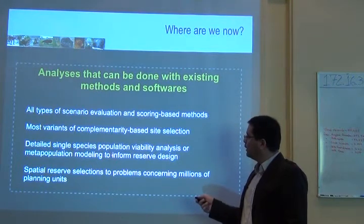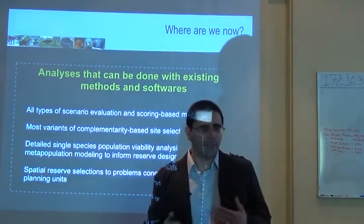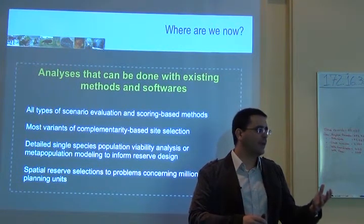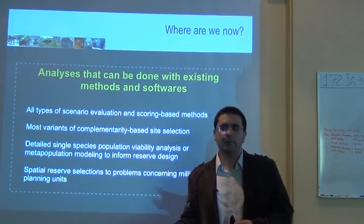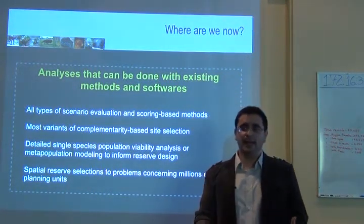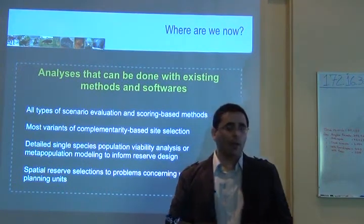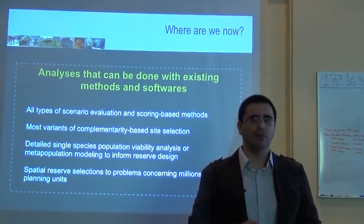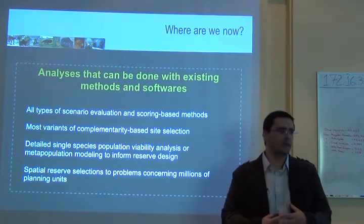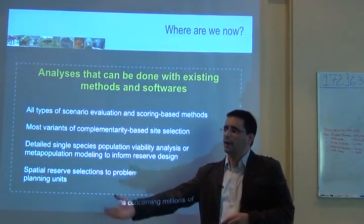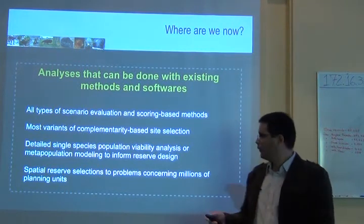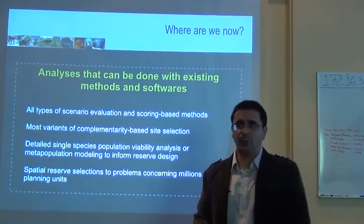We can also do metapopulation modeling to inform reserve design. Back in the 90s we had the debate called the SLOSS debate — whether to protect a single large area or several small areas. In any case, you can work with metapopulation models to determine the structure of the metapopulation and choose which patches of habitat should be protected, how patches should be connected, and how protected areas should be connected in space. We can also do spatial reserve selection for problems involving millions of planning units — we already have the computational capacity to do that.